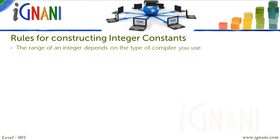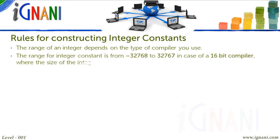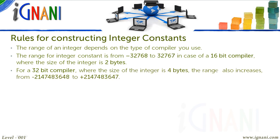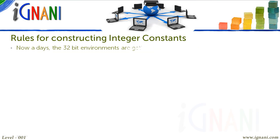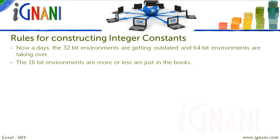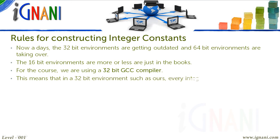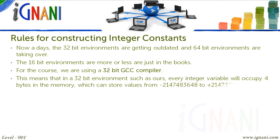The range of an integer depends on the type of compiler you use. The range for integer constant is from minus 32768 to plus 32767 in case of a 16-bit compiler, where the size of the integer is 2 bytes. For a 32-bit compiler, where the size of the integer is 4 bytes, the range also increases. In recent days, the 32-bit environments are getting outdated and 64-bit environments are taking over, so 16-bit environments are more or less just in the books. For this course, we are using a 32-bit GCC compiler, meaning every integer variable will occupy 4 bytes in memory. These are some examples of integer constants.